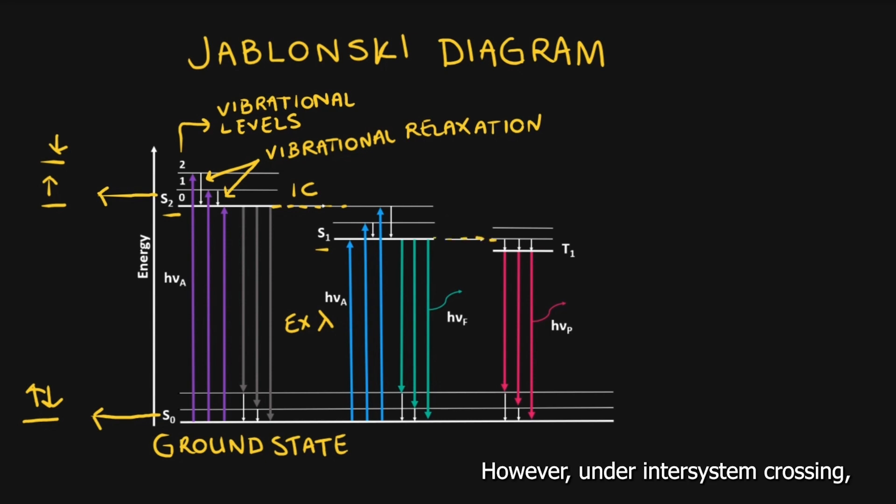However, under intersystem crossing, we go from a singlet excited state to a triplet excited state. In triplet states, the electrons are unpaired and have the same spin orientation.